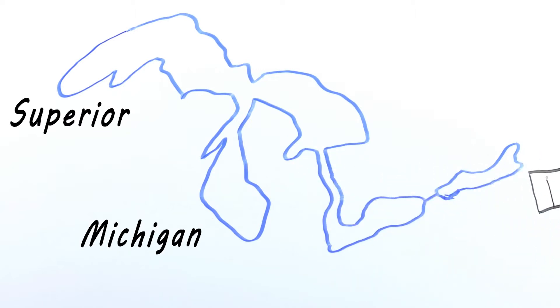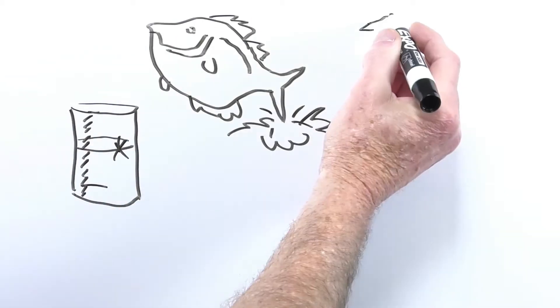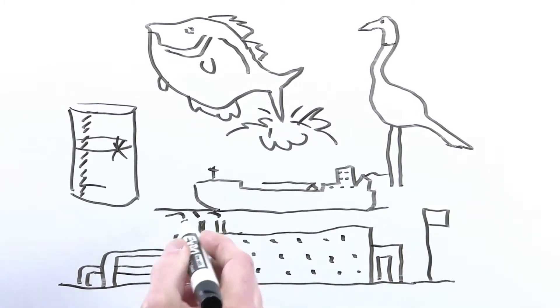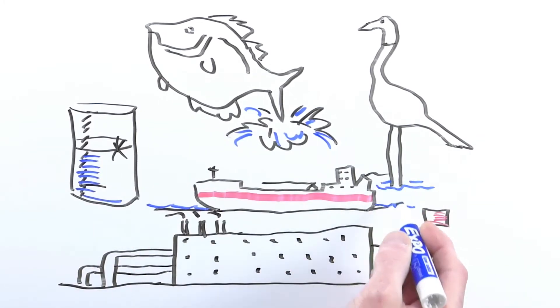Superior, Michigan, Huron, Erie, and Ontario. More than 35 million people drink from them. Thousands of species thrive in their habitats, and they are vital to industry and transportation in the Great Lakes region.